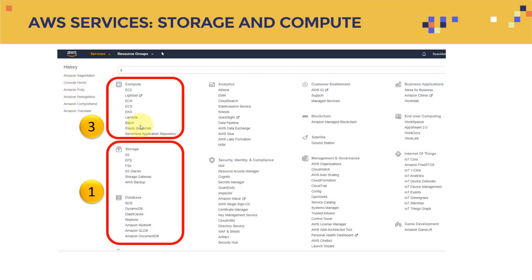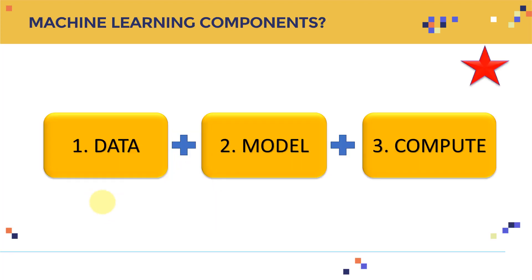When you open AWS, you will find a ton of services — compute, storage, databases, analytics, security, customer enablement, tons and tons of services. Obviously we can't cover all of them, but I want to link them specifically to our AWS machine learning certification. As I mentioned, we need our model, we need data, and we need compute. AWS offers all of them and more, so you don't need to go anywhere to build your very advanced machine learning models.